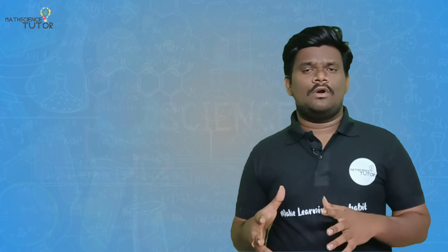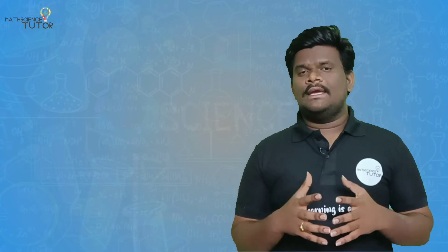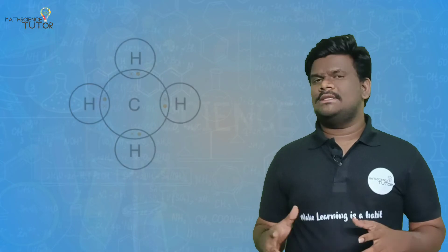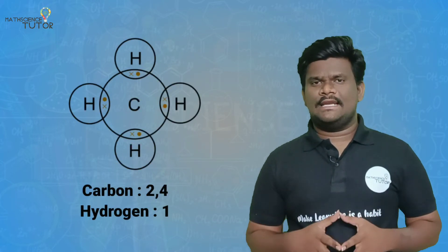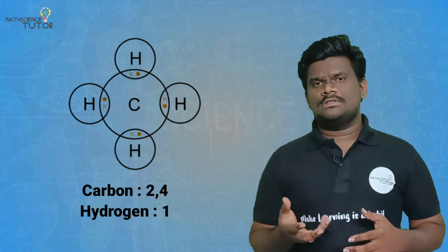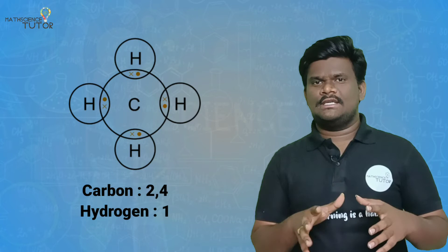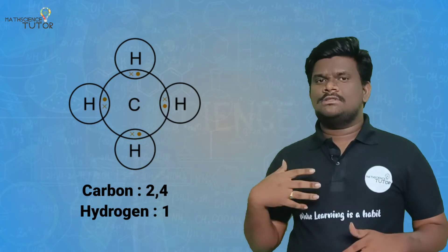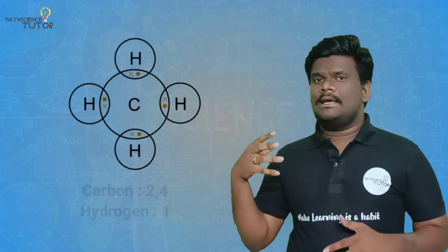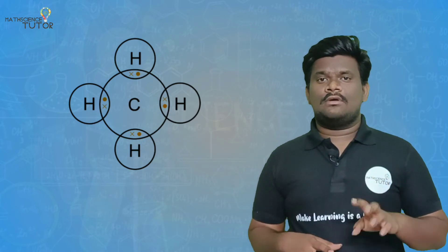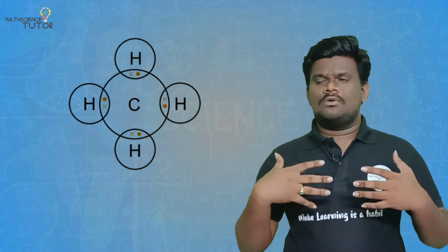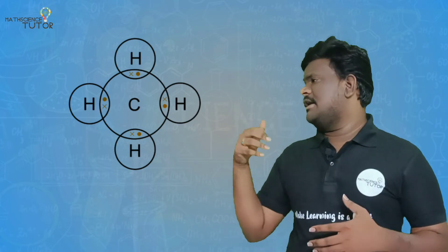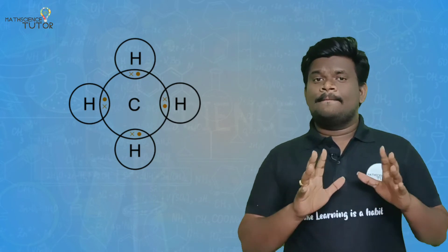Now we have looked at homogenous molecules achieving octet stability. For hetero atoms — for example, in the case of methane, water molecule, and CO2 — we have to satisfy the octet rule. Coming to methane: carbon has four valence electrons in its outermost shell, and hydrogen has only one electron in the first energy level. Carbon can form four covalent bonds to achieve octet stability.